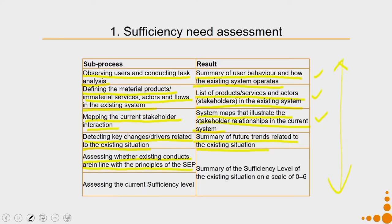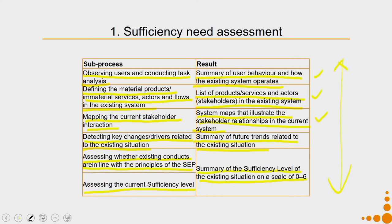Then we assess whether the existing conducts are in line with the principles of SEP and assess the current sufficiency level, creating a summary of the sufficiency level of the existing situation on a scale of 0 to 6. The last sub-process in this need assessment is assessing the balance of the existing situation — visualizing the sufficiency level and balance regarding both the four dimensions (people, planet, profit, and technology) and the three components within each dimension: reasonableness, moderation, and self-immunity.